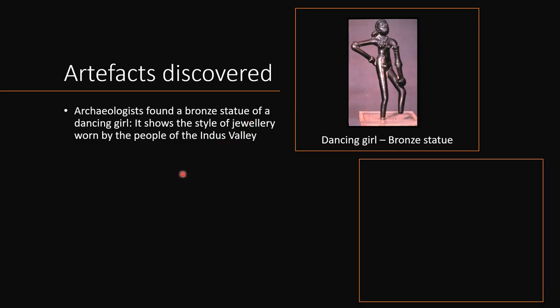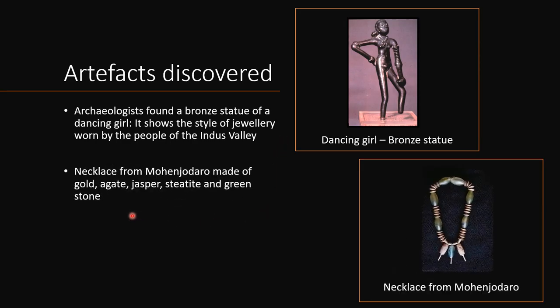Now we will talk about the artifacts discovered by archaeologists at the Indus sites. First, archaeologists found a bronze statue of a dancing girl, named the Dancing Girl. It shows the style of jewelry worn by people of the Indus Valley. Another very important artifact discovered was a necklace from Mohenjo-Daro, made of gold, agate, jasper, steatite, and green stone.